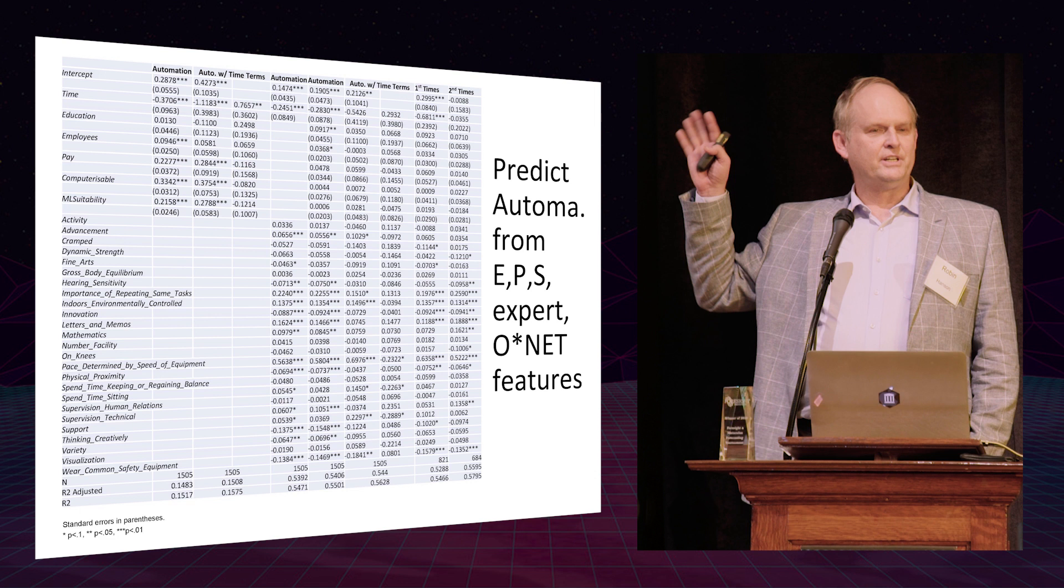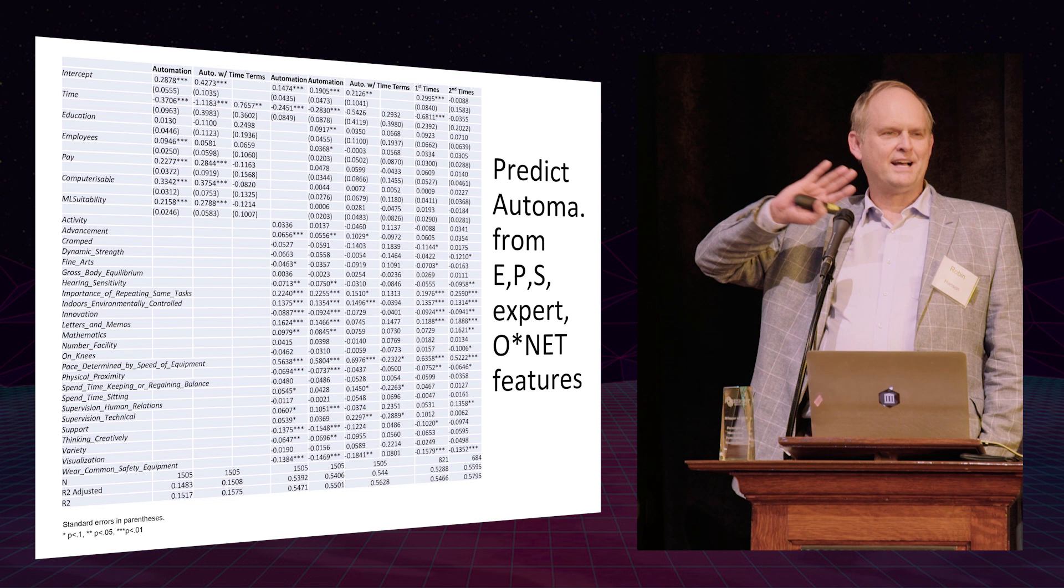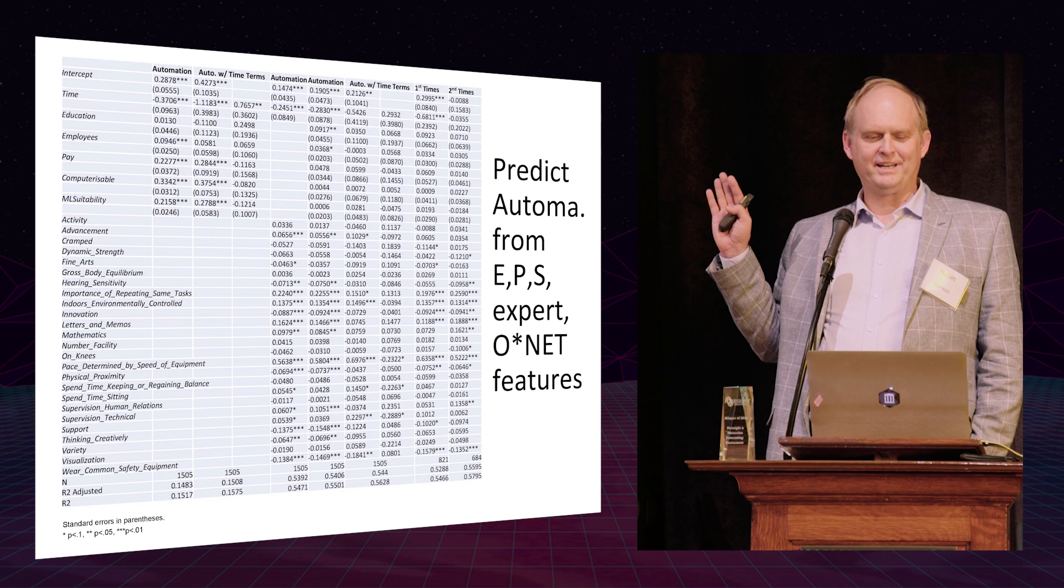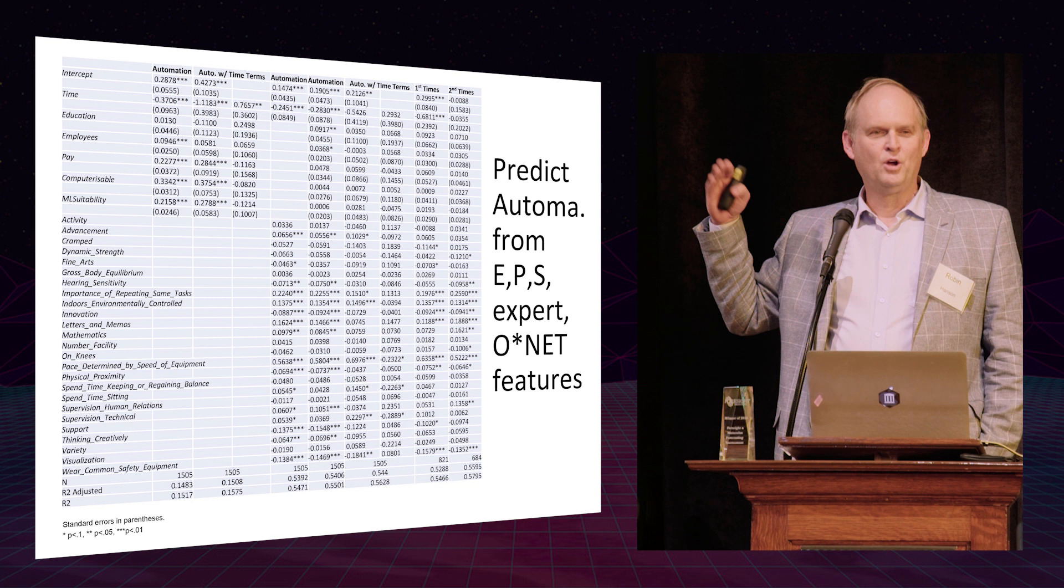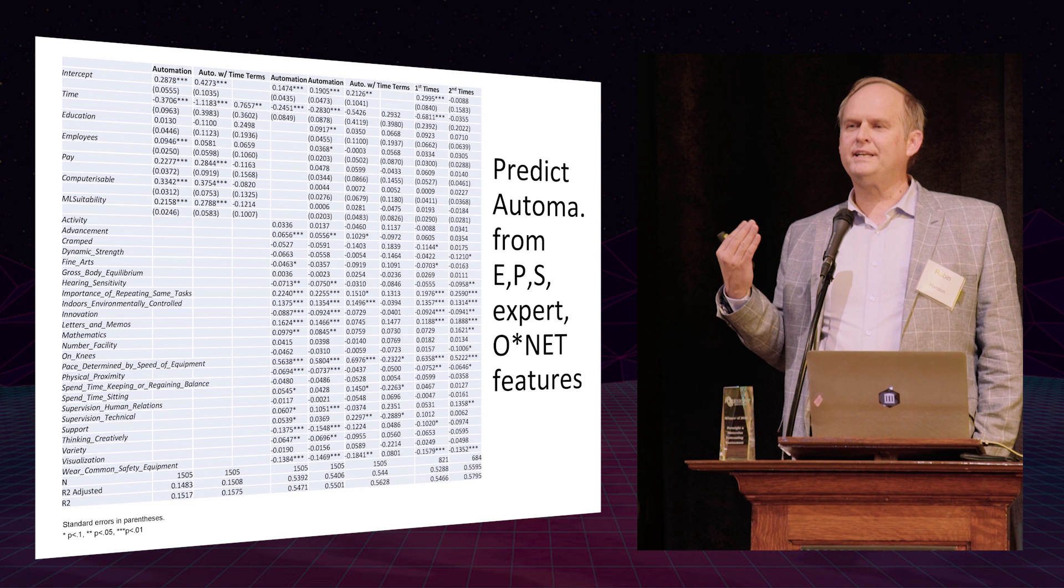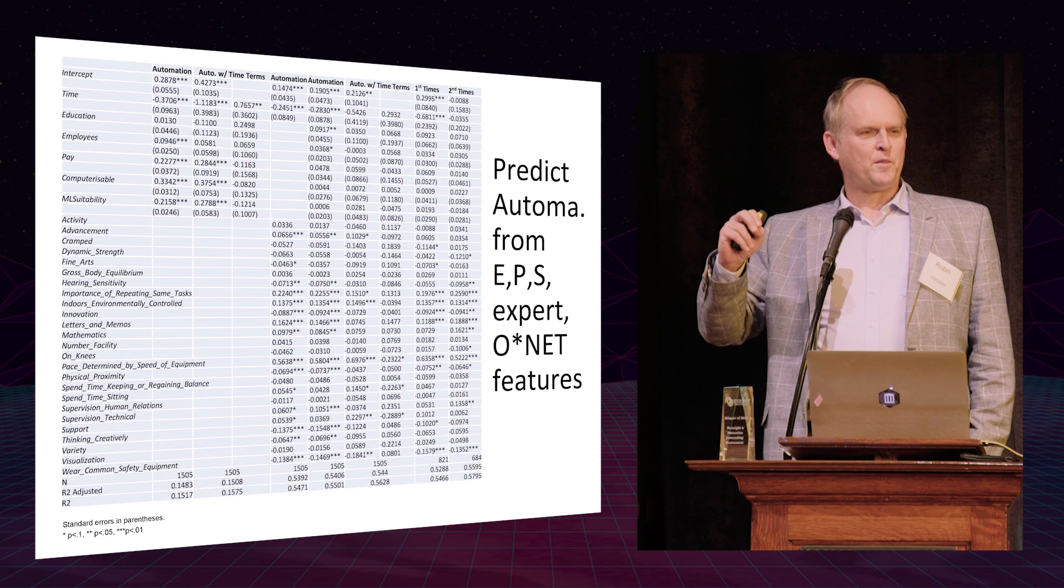However, this data set we took this from has 252 other variables. And we can use all of those to try to predict which jobs are automated. And what we see here is the best 25 of those. And throwing those in knocks out all those other variables and explains over half the variation, which says we understand a lot about which jobs in the past have been automated. And they're mostly pretty mundane things that you understand from ordinary mundane automation. Like the most important variable is the pace of your job is determined by some piece of equipment you have to keep up with. Or that the pace of your job is really important.